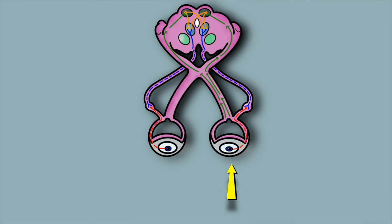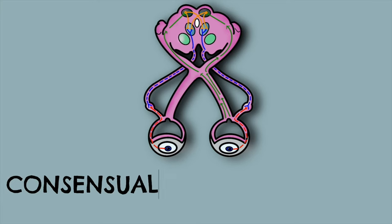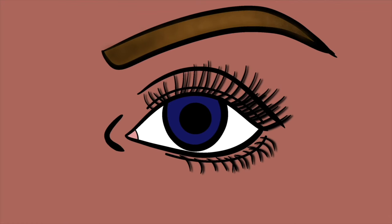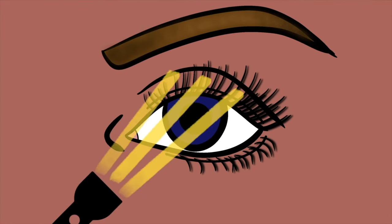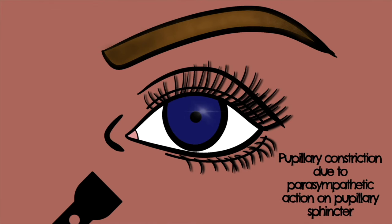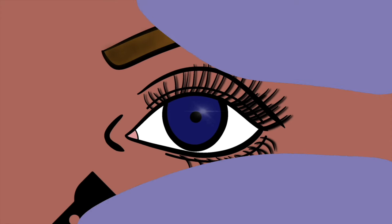The eye that the light was shone into is said to have a direct reflex, whereas the opposite eye is said to have a consensual reflex. On examination it is normal to see constriction of the pupil you're shining the light into in the direct reflex, and constriction of the opposite eye in the consensual reflex. Pupil constriction is due to parasympathetic action of the pupillary sphincter muscle of each eye.